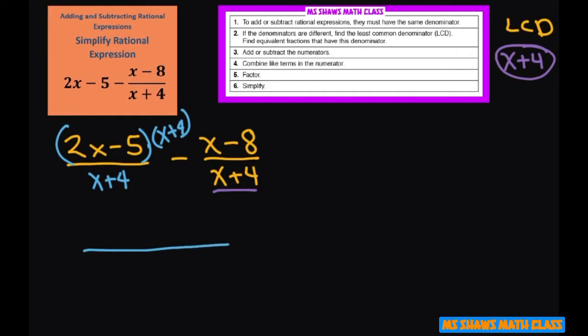So basically what we have is x plus 4, and we have 2x minus 5 times x plus 4, and then for this part don't forget to distribute that negative there, so that's going to be minus x plus 8.